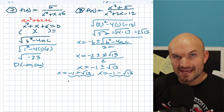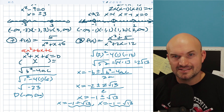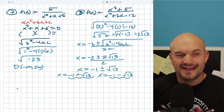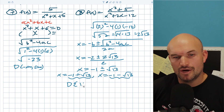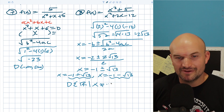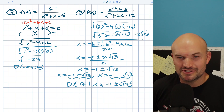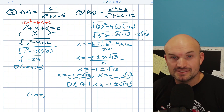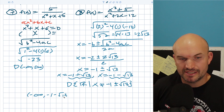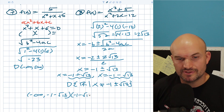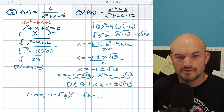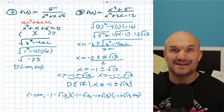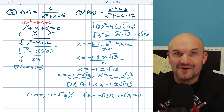Now we write the domain in interval notation. Most teachers would accept: all real numbers such that x cannot equal −1 ± √13. But in interval notation, using the smaller value (−1 − √13) and larger value (−1 + √13): the domain is (−∞, −1−√13) ∪ (−1−√13, −1+√13) ∪ (−1+√13, ∞). That's a big answer, but hopefully these eight examples were helpful.